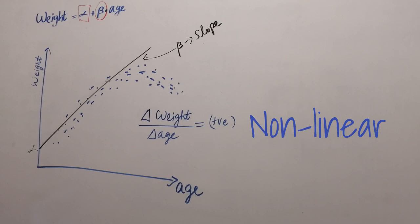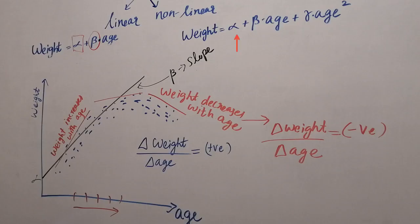For instance, in this case, a better fit of the data would look like that weight is equal to alpha the intercept plus beta times age plus gamma times age to the power of 2.